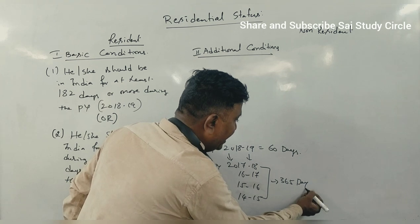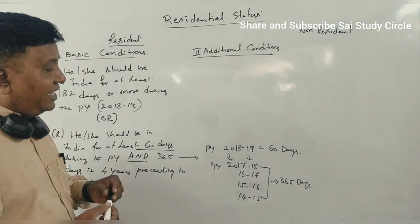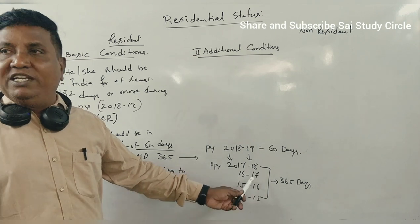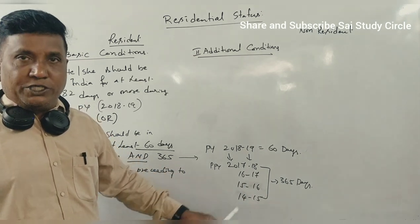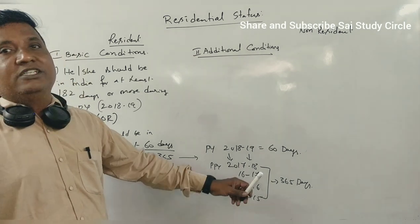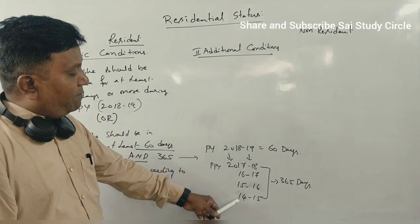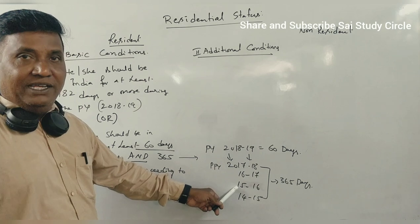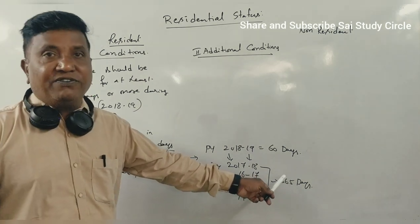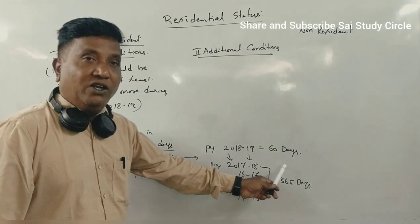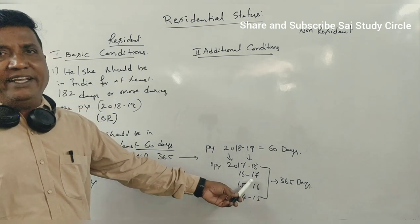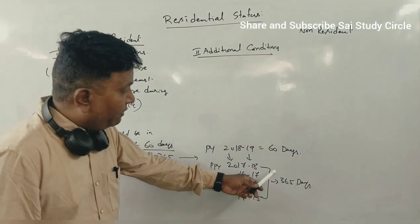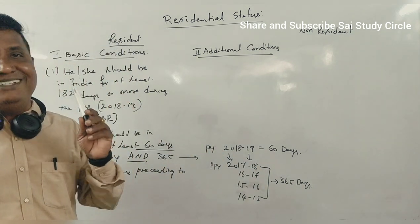The 365 days in those 4 preceding years can be split across different years — they need not be continuous. For example, if a person was in India for 150 days in 2014–15, 100 days in 2016–17, and 200 days in another year, that totals more than 365 days, so the condition is satisfied. But what is compulsory is that in the previous year itself, the person must be present for at least 60 days.